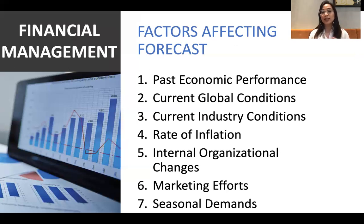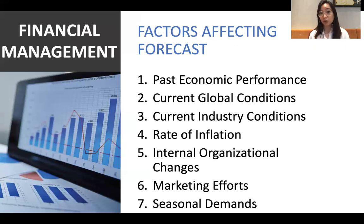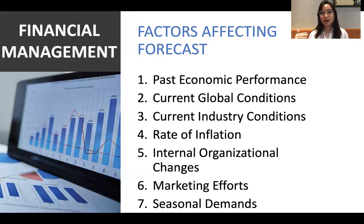The next factor is internal organizational changes — whoever leads the company can affect everything: budgets, decisions, and all business activities. Next is marketing efforts and seasonal demands. All marketing efforts come with associated budget and expenses. For example, if you're selling ham, it sells well during the holiday season but not during March, April, or May when the season is over. This seasonal variation affects the kind of forecasting, sales, and profits a company can expect.